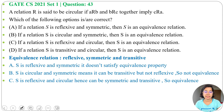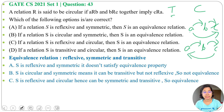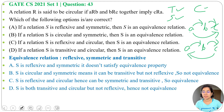Option D: If a relation S is transitive and circular, then S is an equivalence relation. Transitive means A related to B and B related to C implies A related to C. Circular means A related to B and B related to C implies C related to A. Here A is related to C and C is related to A — so it is symmetric. But there is no way to prove it is reflexive, hence it is not an equivalence relation.